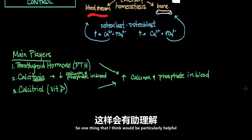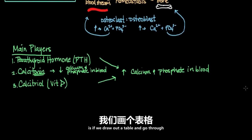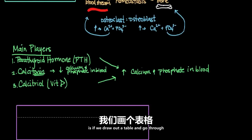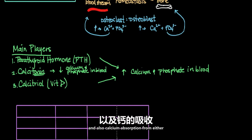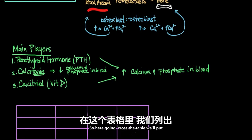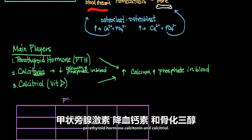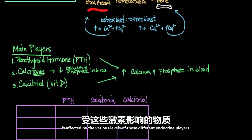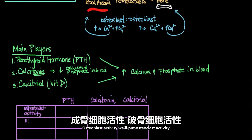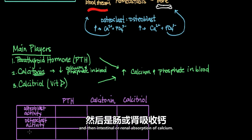It would be particularly helpful to draw out a table showing how each of these hormones affects osteoblast and osteoclast cellular activity, as well as calcium absorption from the intestines and kidneys. Going across the table we have parathyroid hormone, calcitonin, and calcitriol, and the rows cover osteoblast activity, osteoclast activity, and intestinal or renal absorption of calcium.